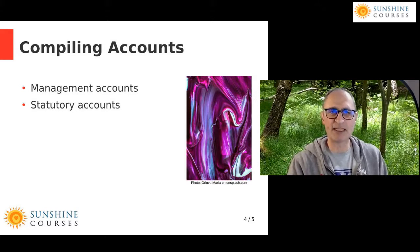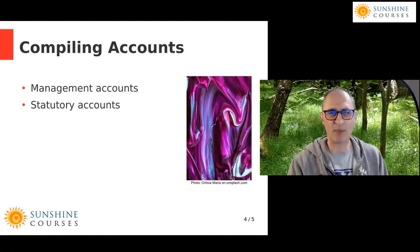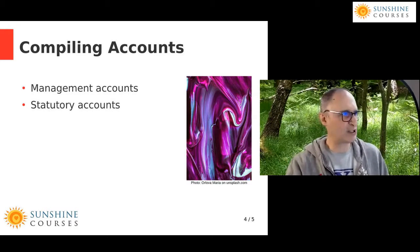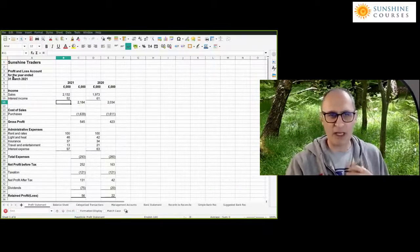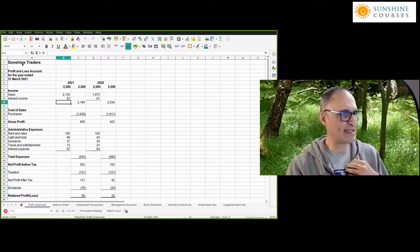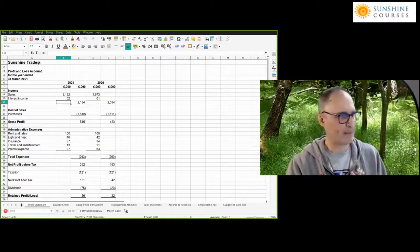The idea of statutory accounts is to create a standardized set of accounting so that investors and other people — for example banks — can compare accounts from one business to another and know they're consistent. An example of statutory accounts: one type covers the flow of funds during an accounting period. In this case, the accounting period is for the year ended 31st of March 2021 of Sunshine Traders.